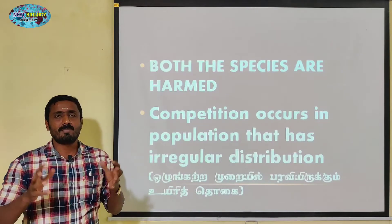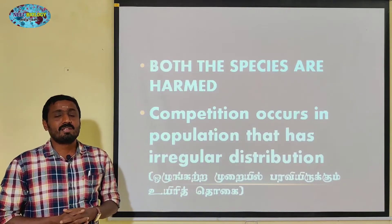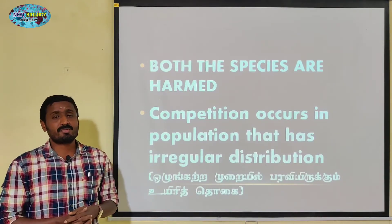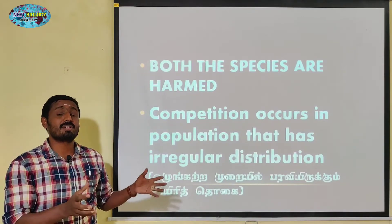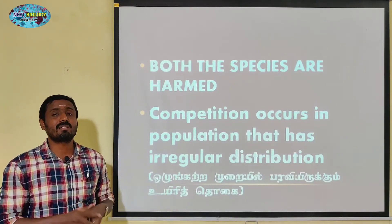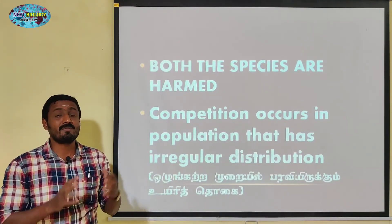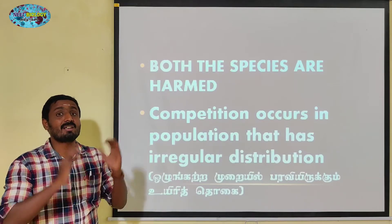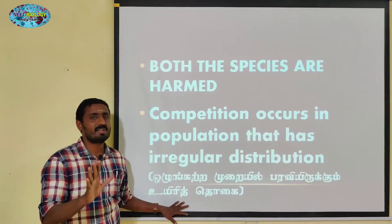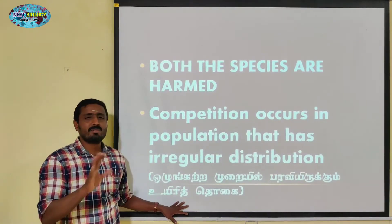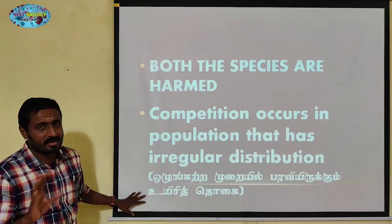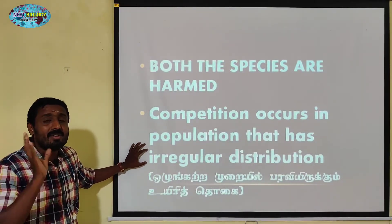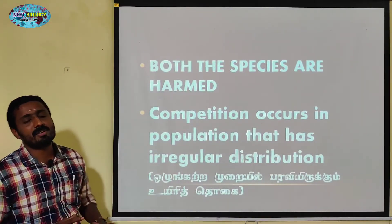Let's consider population. This is a population — what is meant by irregular distribution in a population?